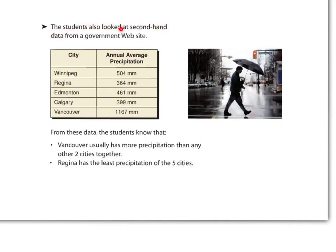These students also looked at second-hand data from a government website. They had annual average precipitation data: Winnipeg 504 millimeters, Regina 364 millimeters, Edmonton 461 millimeters, Calgary 399 millimeters, Vancouver 1,167 millimeters.